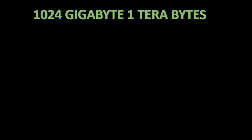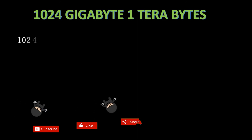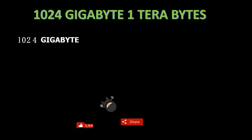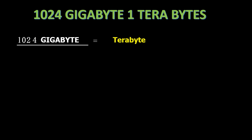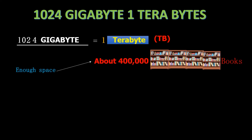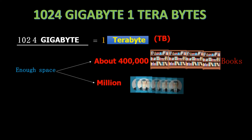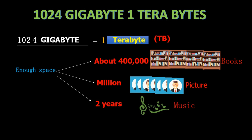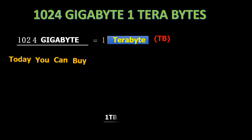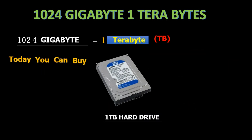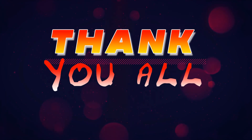Next, what is it called if you have 1,024 gigabytes? A 1,024 gigabytes is called a terabyte, abbreviated as TB. 1 terabyte is enough space to hold about 400,000 large books, or a million photos, or 2 years of continuous music. Today you can buy a 1,024-terabyte hard drive, which is available in the market — which is pretty amazing. Thank you all for today's tutorial.